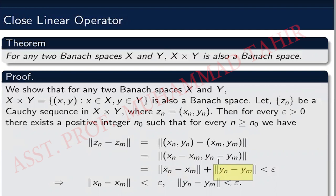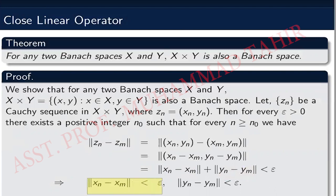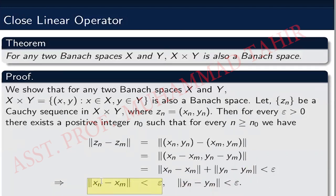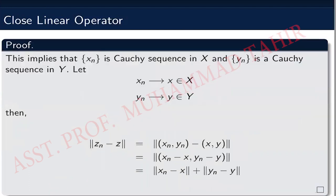Since z_n minus z_m has norm less than epsilon, and these are two non-negative numbers whose sum is less than epsilon, it follows that each individual term is less than epsilon. So the norm of x_n minus x_m is less than epsilon and the norm of y_n minus y_m is less than epsilon. This shows that x_n is a Cauchy sequence in X and y_n is a Cauchy sequence in Y.